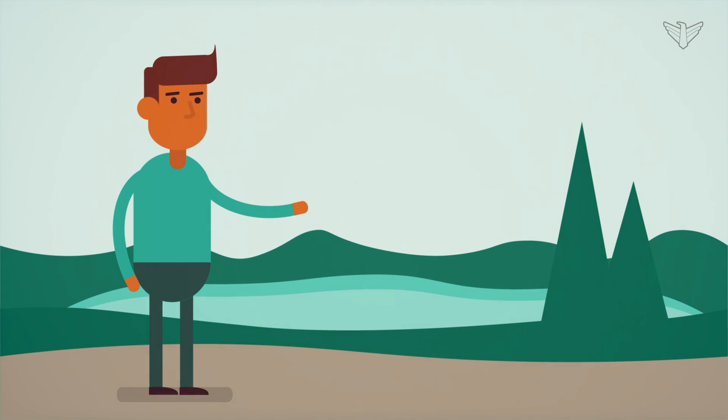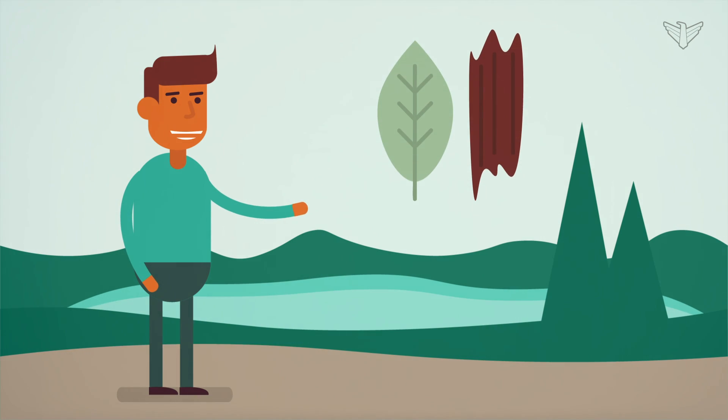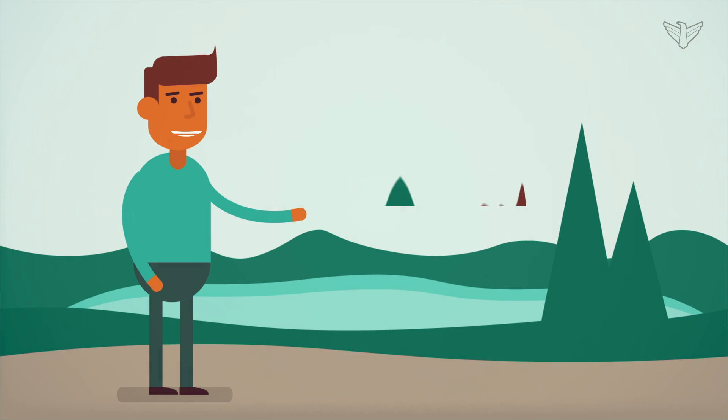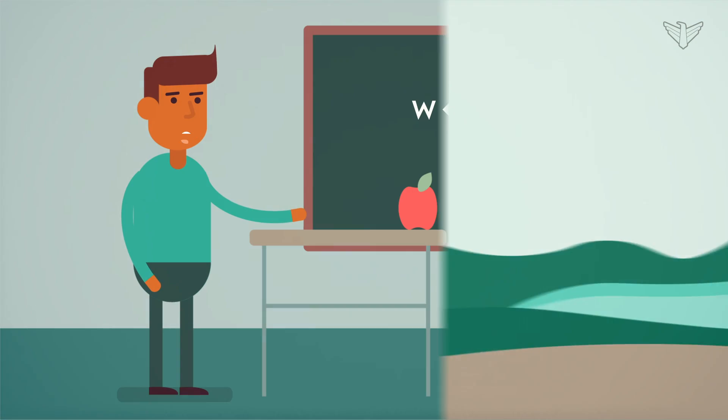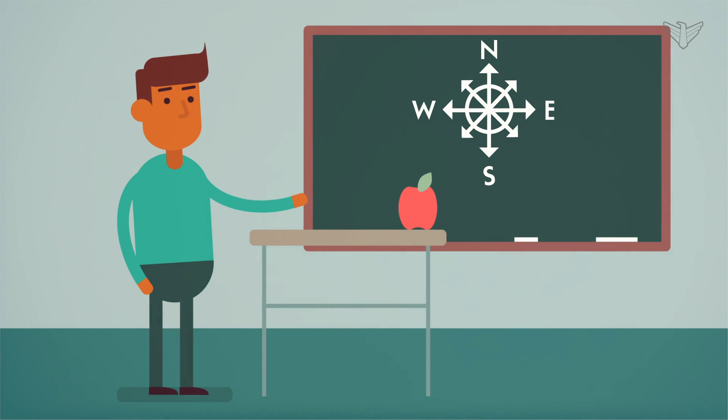We went on a small field trip in the area around our school and collected a leaf and a bark rubbing from a tree northwest, southwest, northeast, and southeast of our school. Then we came back to our classroom and used a book my teacher had and the internet to figure out the name of each tree.